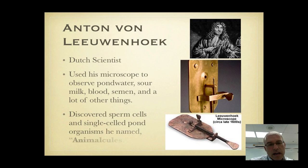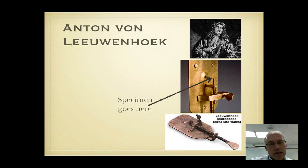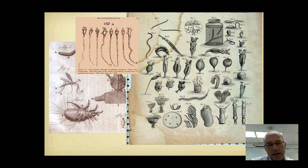He was from the Netherlands so we would say that he's Dutch and he used his microscope to observe things like pond water and sour milk and blood, semen and lots of other things that people were curious about. He discovered sperm cells and he noticed that they were swimming and he noticed also that they were very similar to creatures he saw in pond water which he nicknamed animalcules.